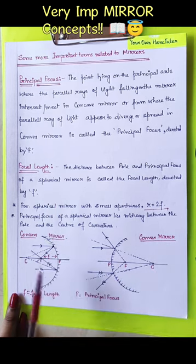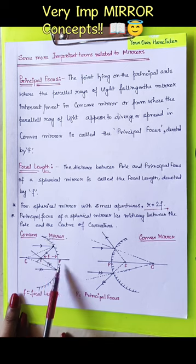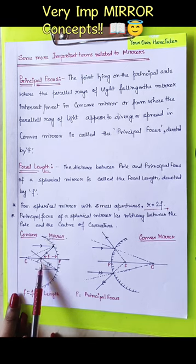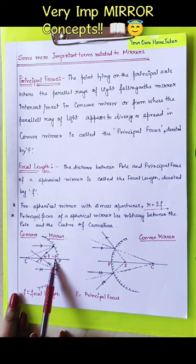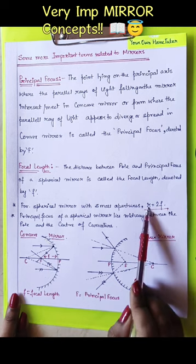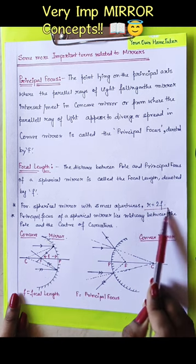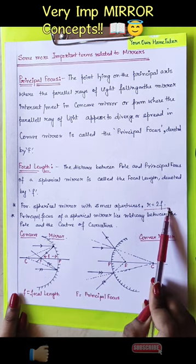What is the focal length? The distance between the pole and the principal focus is known as the focal length. The radius of curvature is equal to twice the focal length.